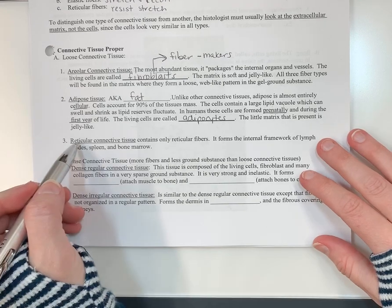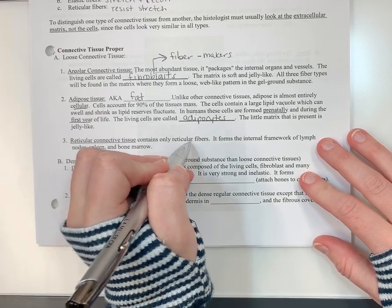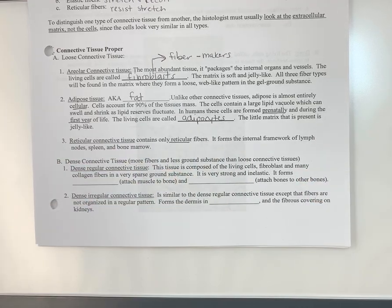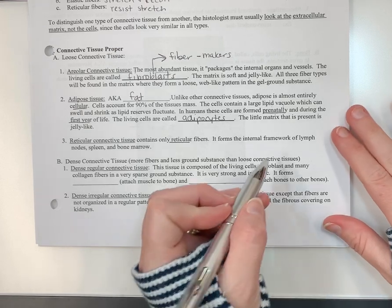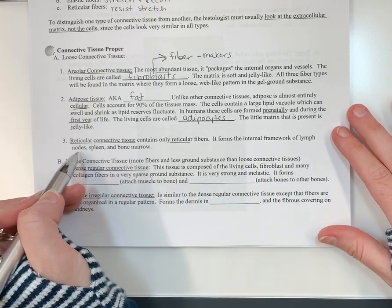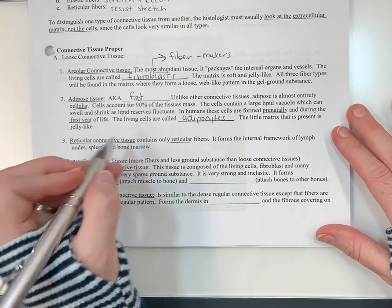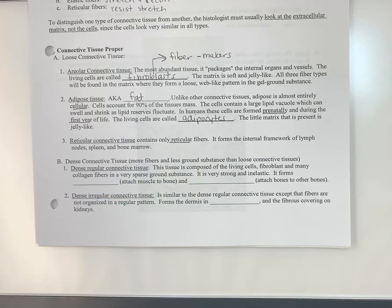So, last one. Reticular connective tissue only has reticular fibers. You're not going to see it very often. I don't think we're going to look at it. But in the lymph nodes, in the spleen, and in the bone marrow is where you'll see that.